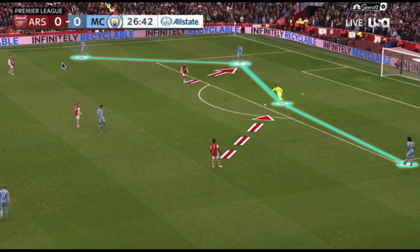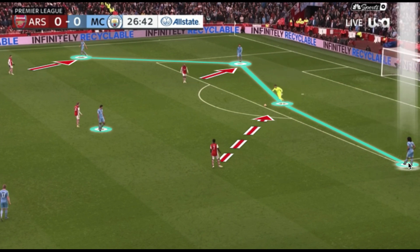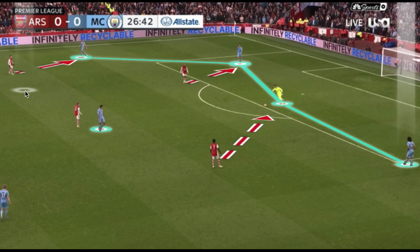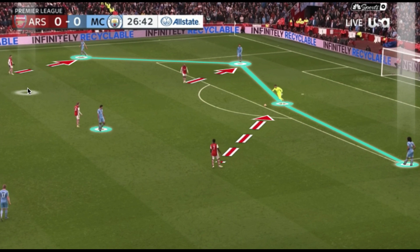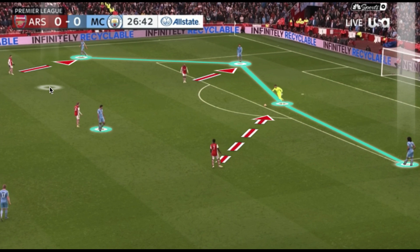As we see here with the man-for-man matchup and the press being initiated — Rodri being marked by Odegaard — Nathan Ake becomes a potential free player, and Cancelo off-screen on the right-hand side is potentially inverting to take advantage of the space and numerical advantage created by this asymmetric right-hand shift of their back line.